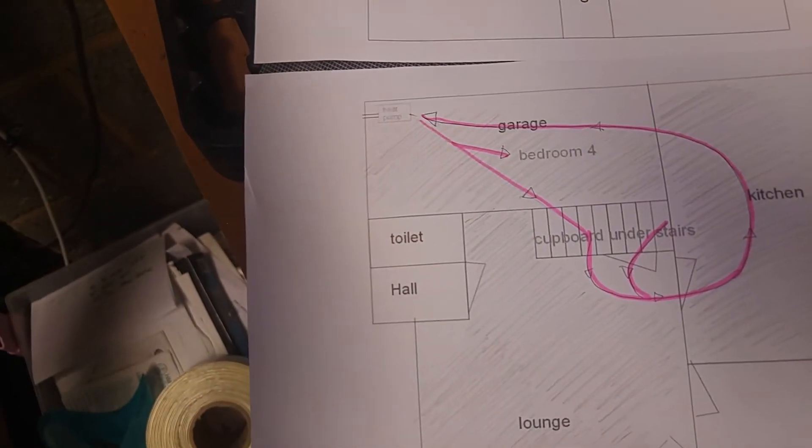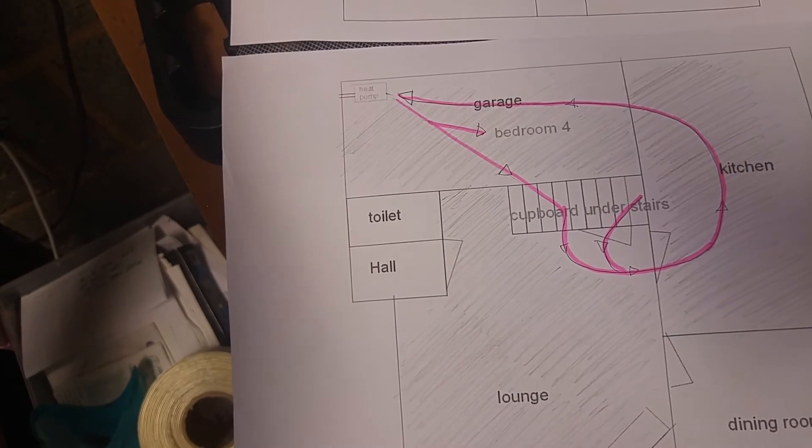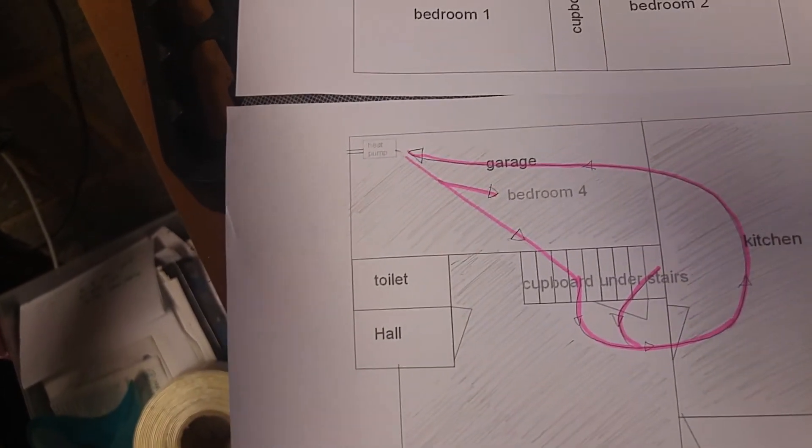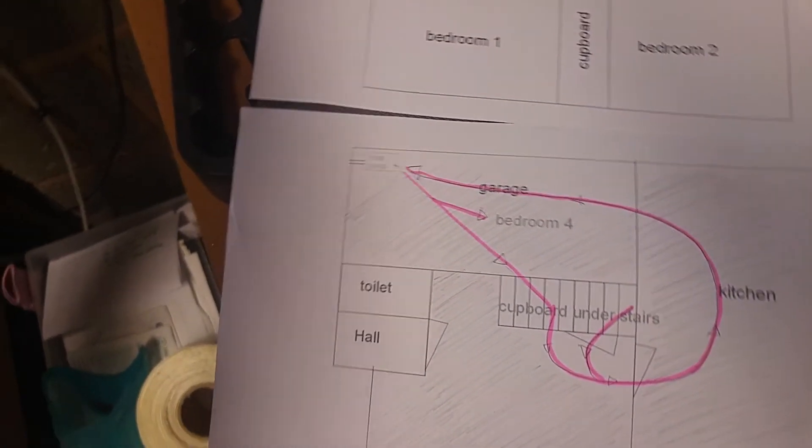And using this method I've covered most of my house with heat for just 16 metres of ducting. And again the only visible ducting is in the garage. That's it. That's all the ducting.